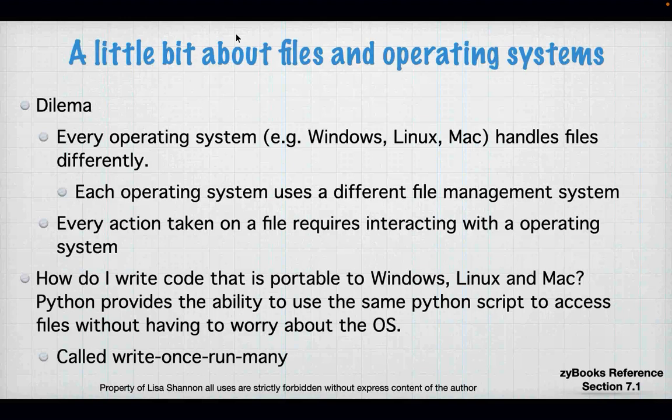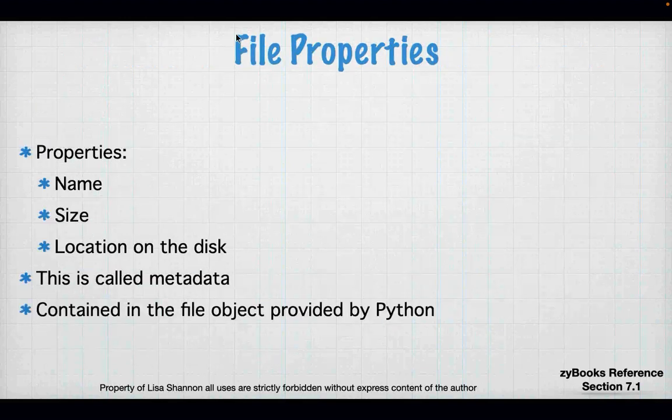When you have a Mac and want to use Microsoft Office on a Mac, you have to buy Microsoft Office for Mac — you can't just buy it for Windows — because they have two different operating systems and the software has to be compiled for the operating system. Python does not. You can write your Python script once and run it anywhere, including with files.